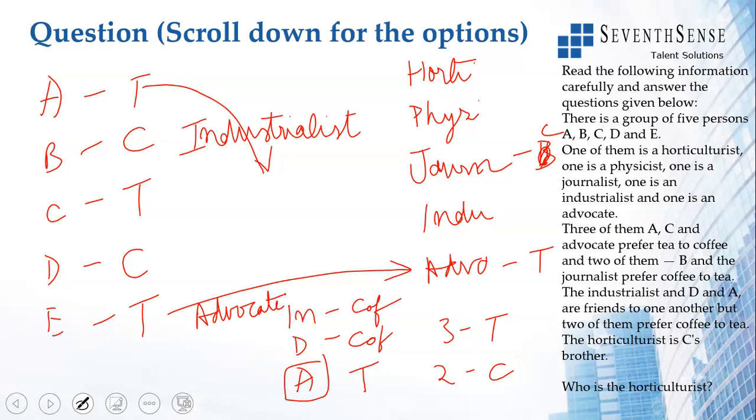That is taken care of. The Horticulturist is, so in the first statement we had three of them, A, C, and Advocate prefer tea to coffee. So E is Advocate. This is done. B and the Journalist prefer coffee to tea. So this person is the Journalist. Prefer coffee to tea.